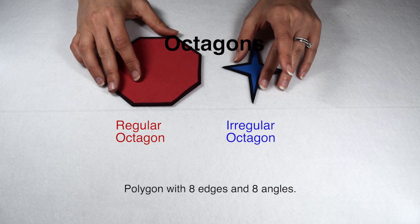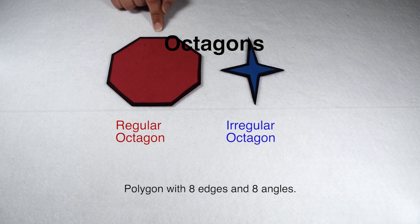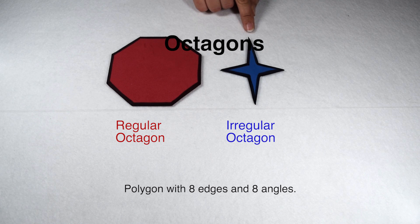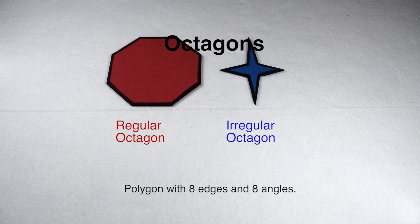Regular octagons are a shape that we're all familiar with because that's what's used for a stop sign. But again, any eight-sided figure is going to be considered an octagon, and most are likely irregular.